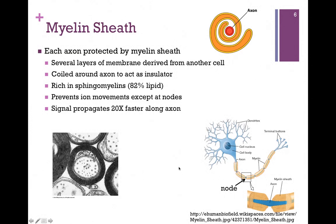This makes the signal move 20 times faster along the axon. Instead of opening and closing all of the sodium and potassium channels down the entire length of the axon, we only have to open and close a few — just the ones at the nodes between those myelin sheaths — making this process go a lot faster.